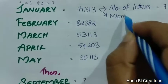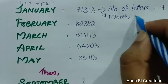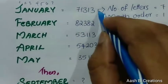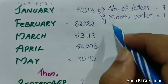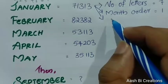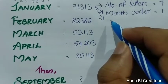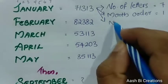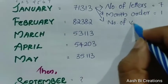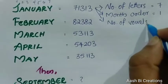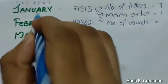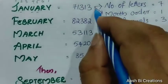We have the correct order. The correct order is 313. How do we get the correct order? The number of vowels: A, E, I, O, U. The vowels in January are A, U, A — that's 3.